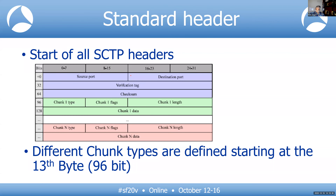This outlines the SCTP header. There's not much to it: source port, destination port, verification tag, and checksum — everything you'd expect in a header outside of the data.